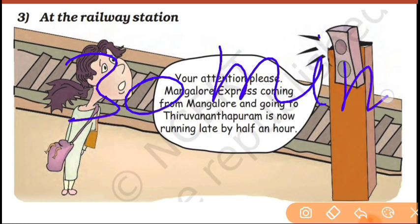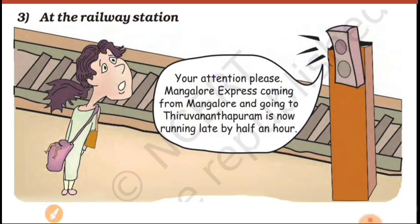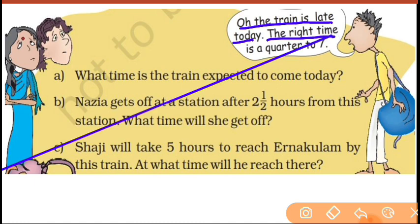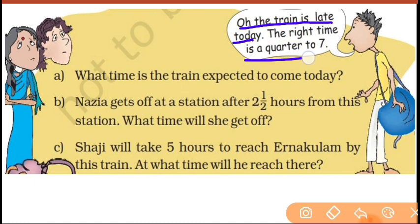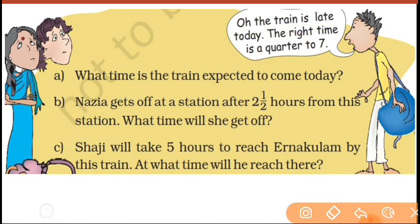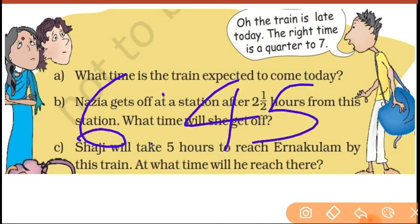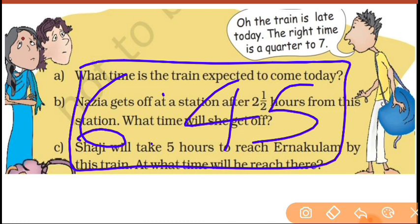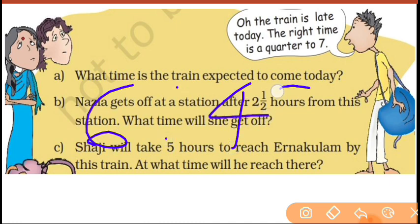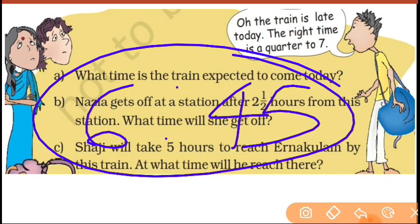Half an hour means 30 minutes — remember that. In one hour you have 60 minutes, so half an hour is 30 minutes. The right scheduled time of the train is quarter to seven. Quarter to seven means 6:45 — 15 minutes before seven o'clock.